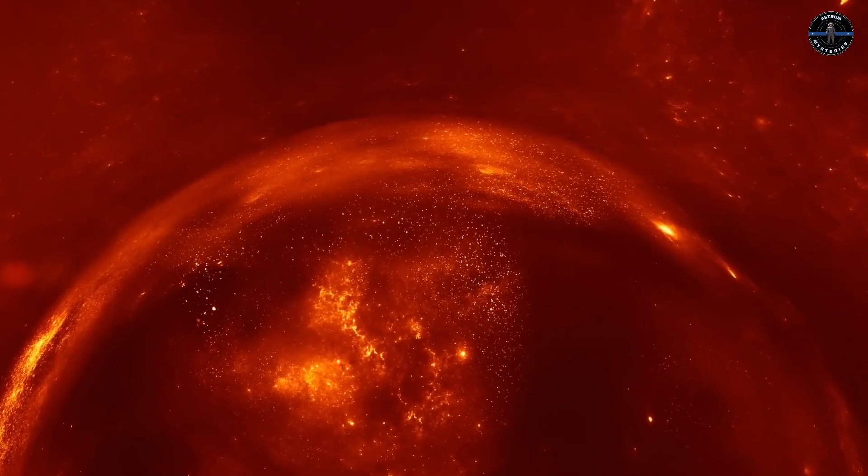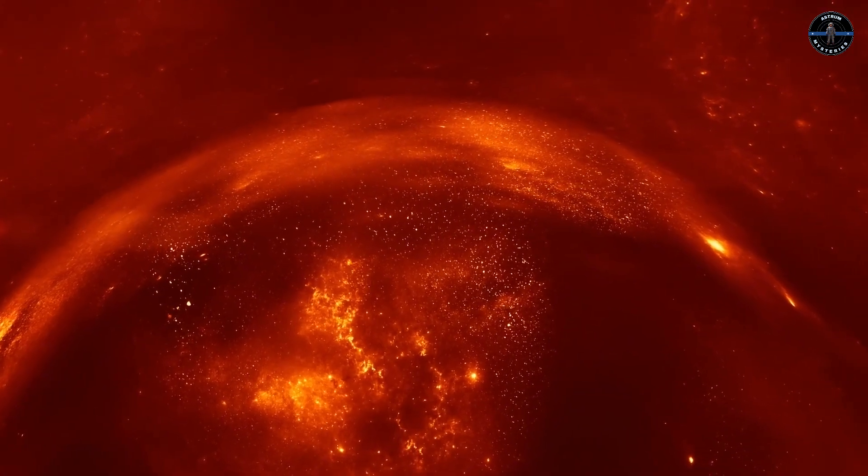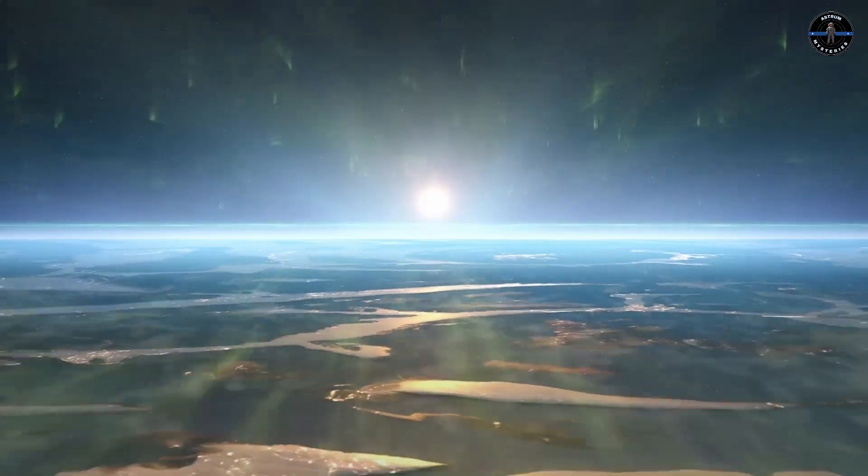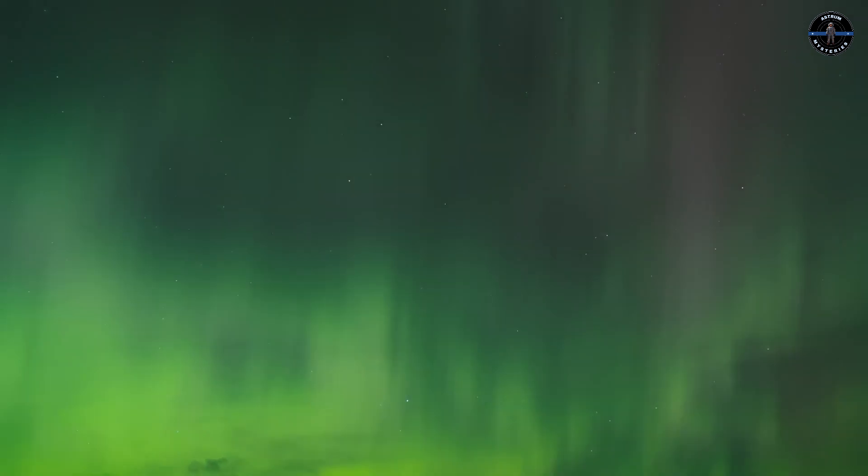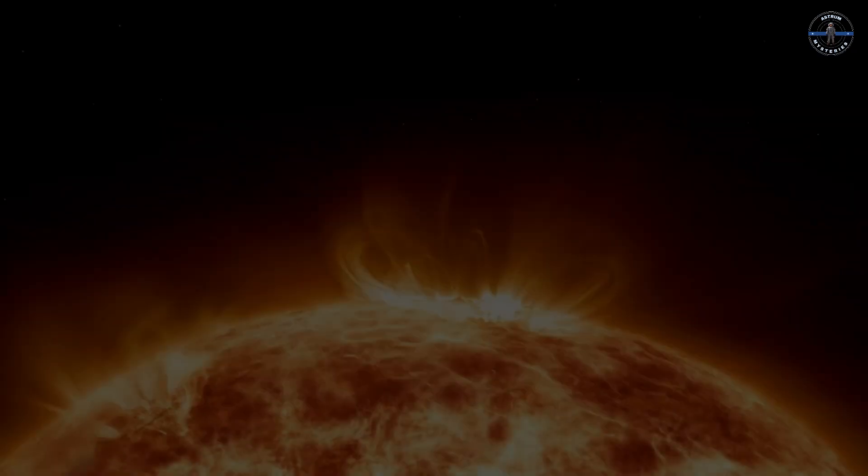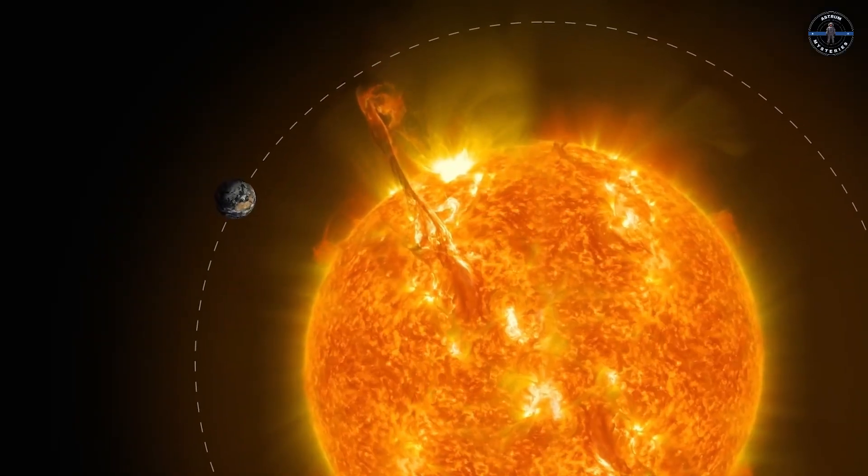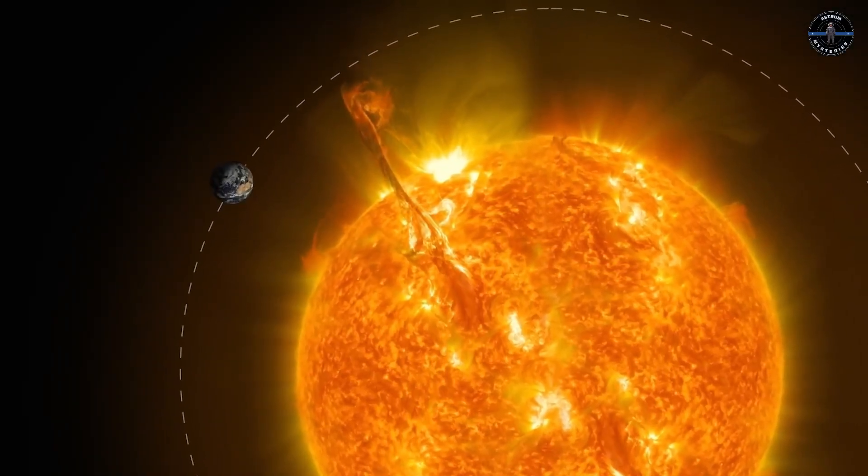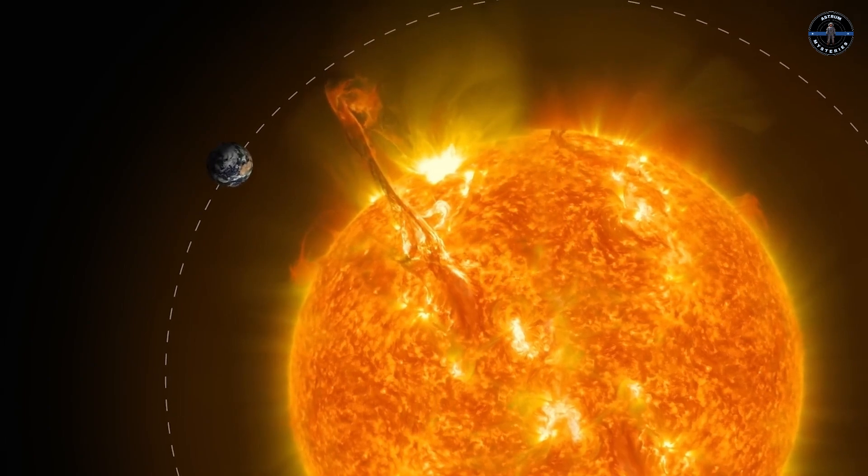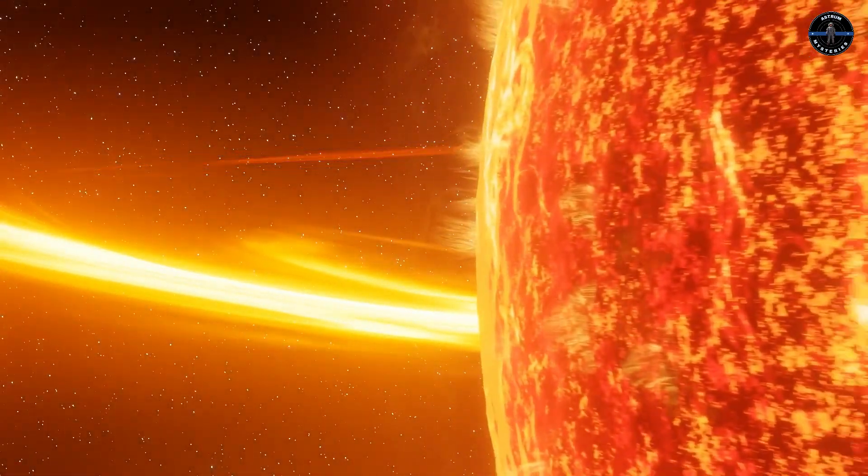Some experts even believe we could experience one of the strongest aurora displays in 500 years if these storms keep up. But why does this happen? The Sun's activity is like a pendulum, swinging from quiet to chaotic and back again. This solar cycle has been observed for centuries, with each one leaving its own mark on history.